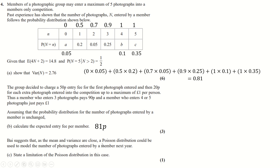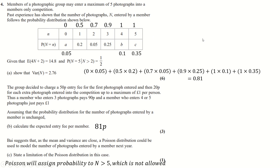The Poisson distribution is suggested as a model, but a drawback is that a Poisson distribution has no upper limit — it would assign positive probability to 6, 7, 8 photos and beyond. Since there is a maximum of 5 photos allowed, the Poisson would not be a good model.